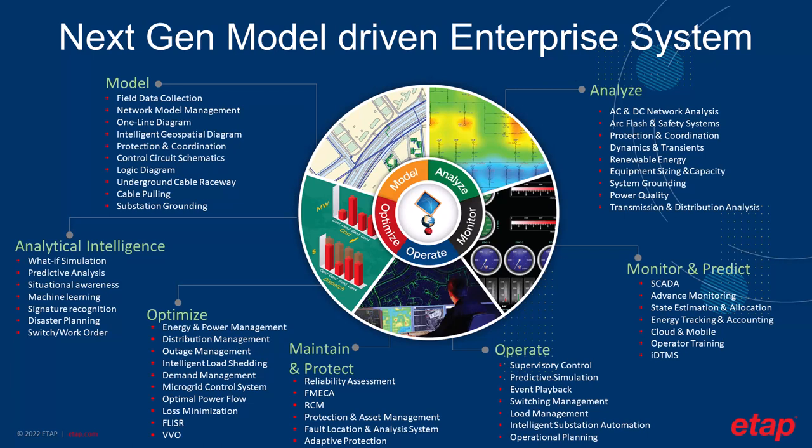Then we move to maintenance and protection, providing capabilities such as assessment of reliability, protection and asset management, and other applications to support the maintenance of the project. We can also optimize energy and power management, distribution management, and intelligent load shedding. Then we go into the analytical intelligence phase, where we use real-time simulation for optimization, switching work order management, disaster planning, and so on. We know that systems continuously get updated, so this cycle never ends.